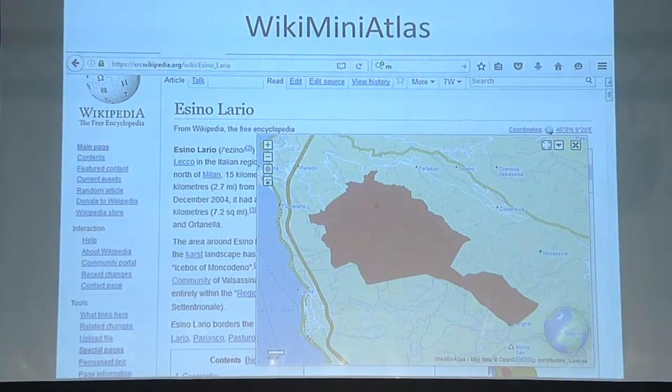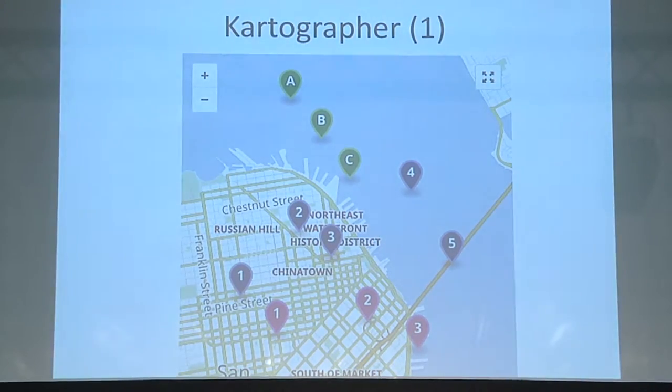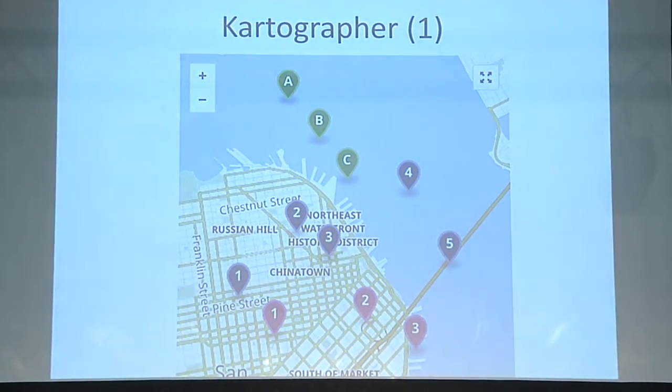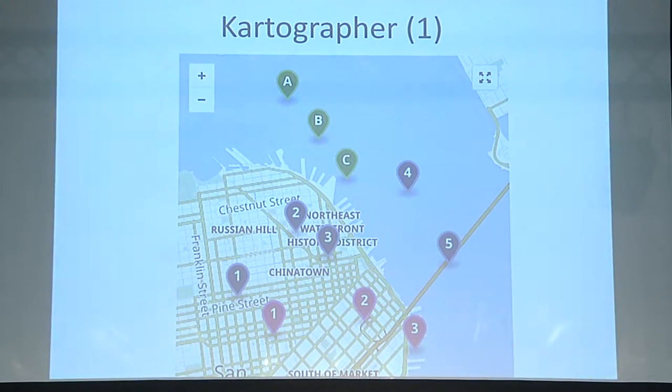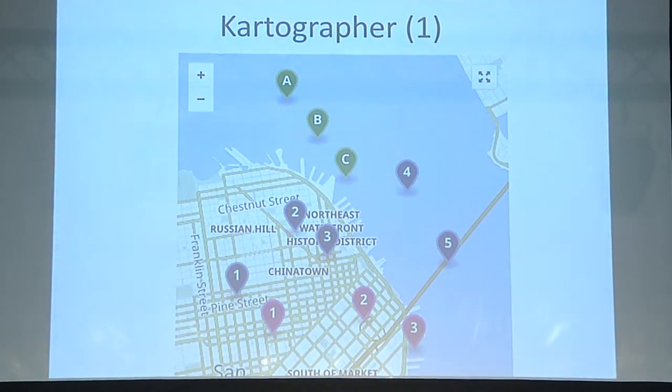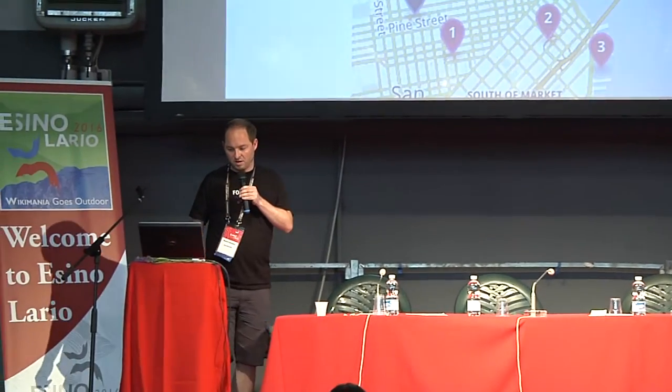Quite recently, someone thought wouldn't it be nicer to be able to embed maps directly into Wikipedia articles — a wish that's been around for at least 10 to 15 years. So there's an extension called Cartographer, developed by Yuri, which makes it possible to embed maps based on OpenStreetMap into your Wikipedia article. This is fairly recent — announced in the last two weeks. Here's an example of San Francisco with a number of waypoints — you can click one and go to the relevant article. This is already live on a couple of wikis.